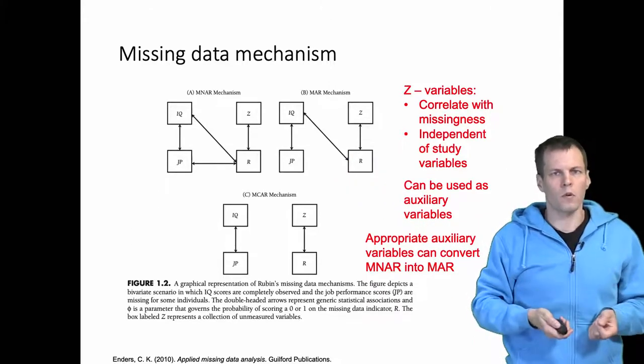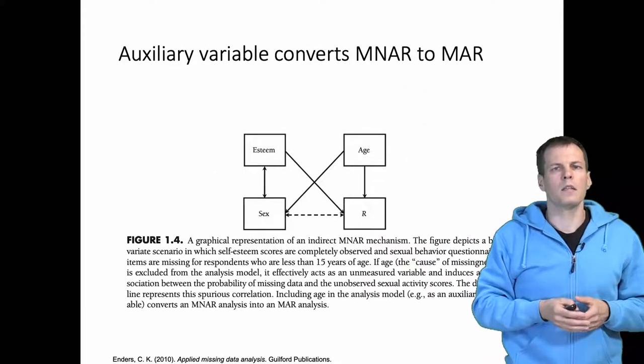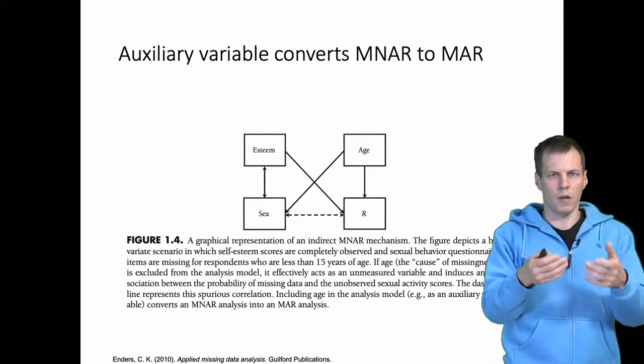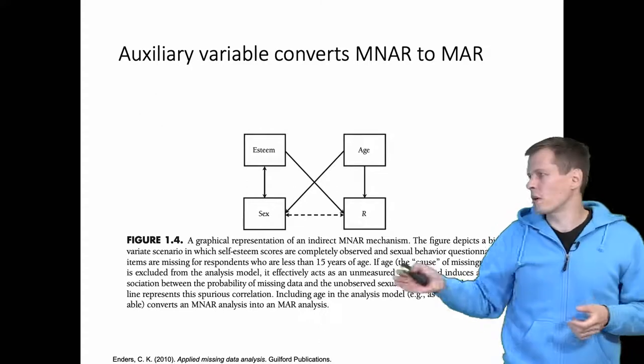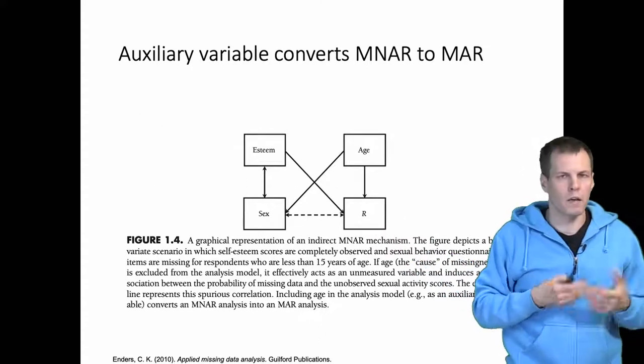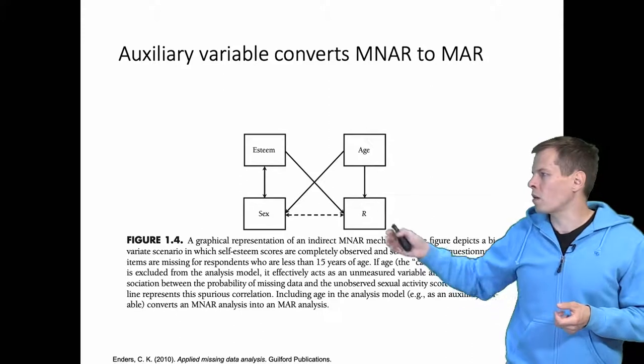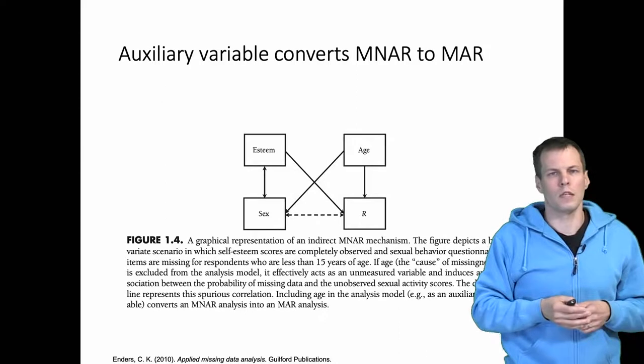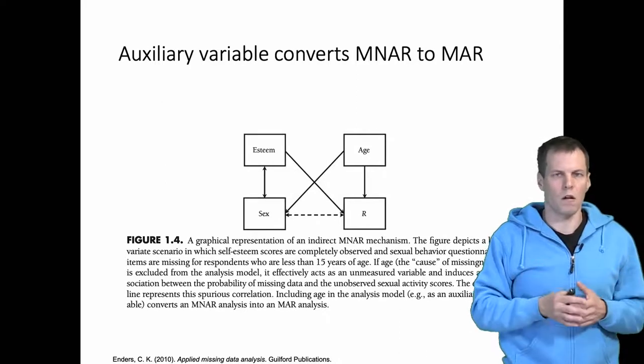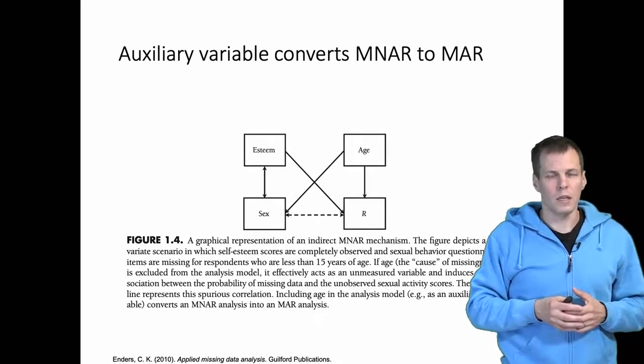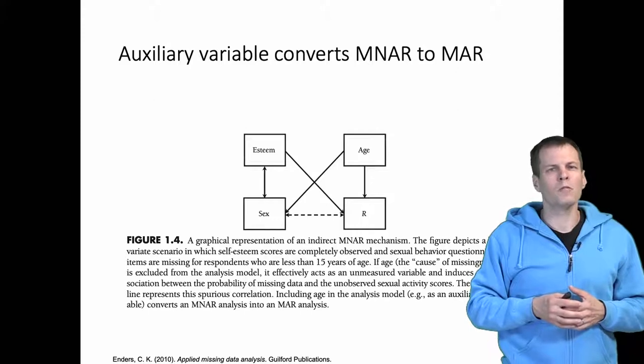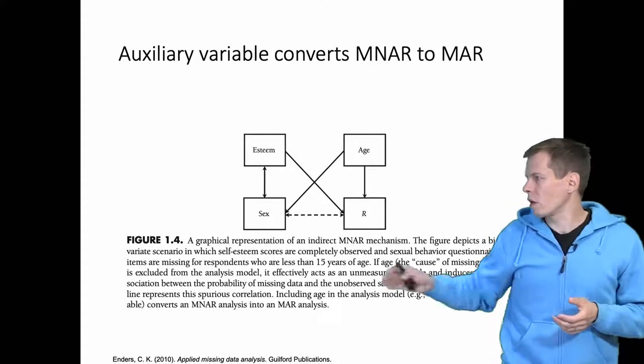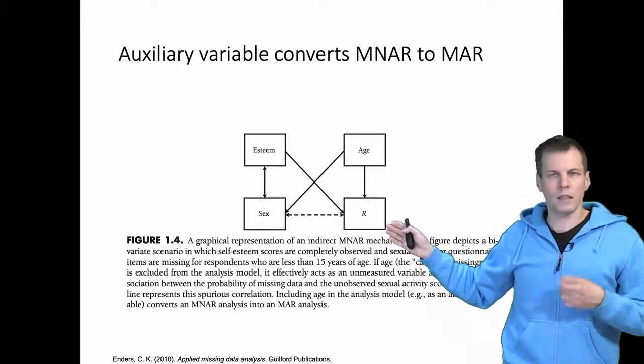The idea of converting missing not at random pattern to missing at random pattern is illustrated by this example. This comes from the Enders book and we have a model where we're interested in the correlation between self-esteem and whether the person is sexually active or not. These are teenagers and we don't think that sexual activity itself has a causal relationship on being selected in the study.